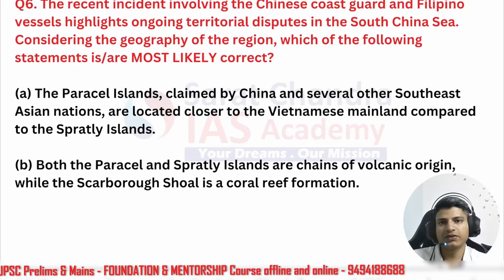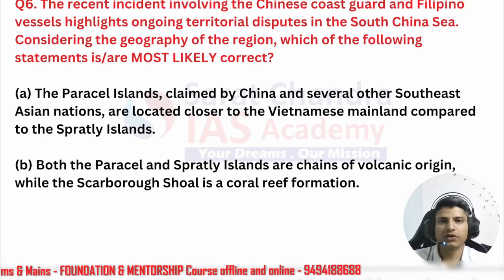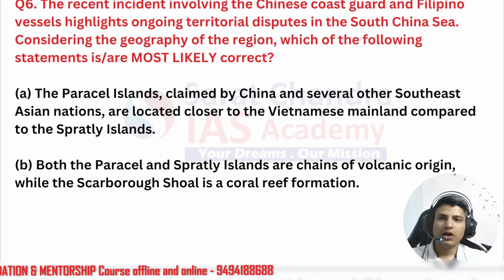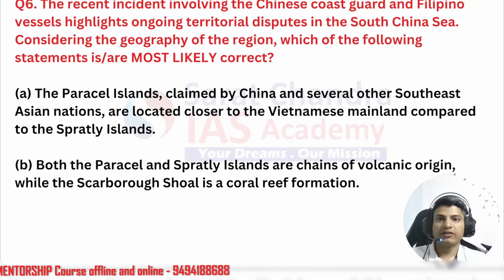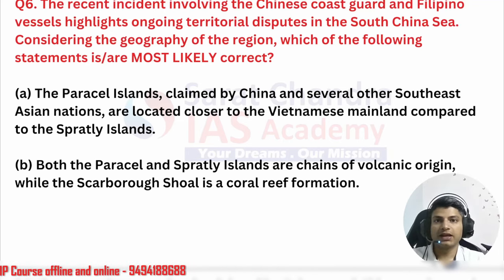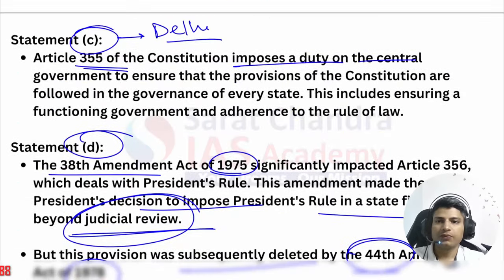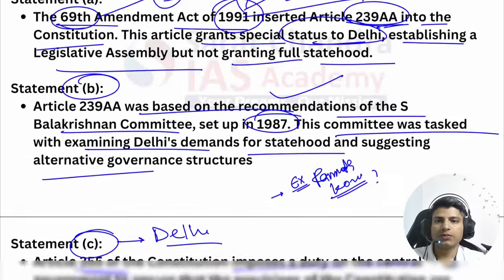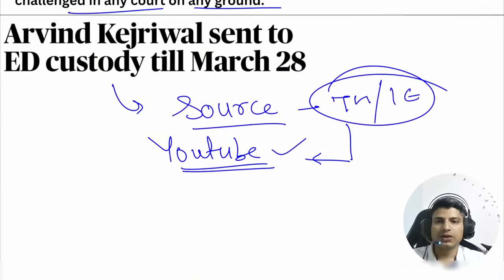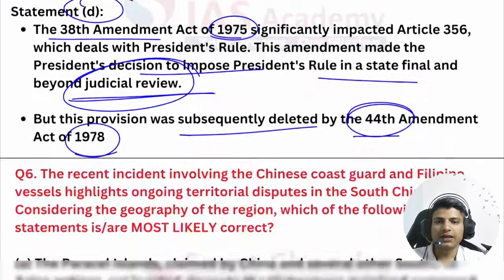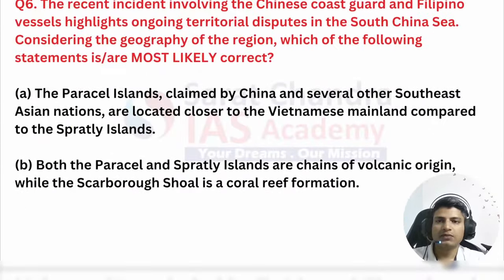Hello and a warm welcome to Sharachandra IAS Academy. This is Yatharth here. Today we'll be resuming from where we had left in the last lecture — that means from the fifth question. The fifth question was about the President's Rule and things going on in Delhi.